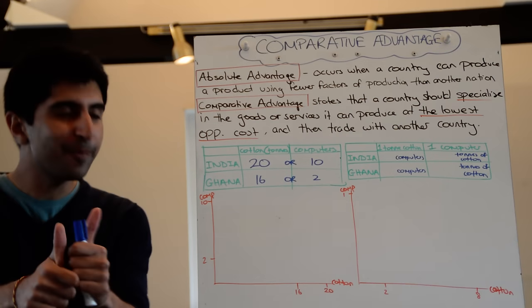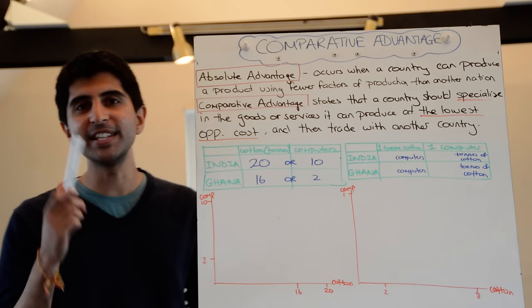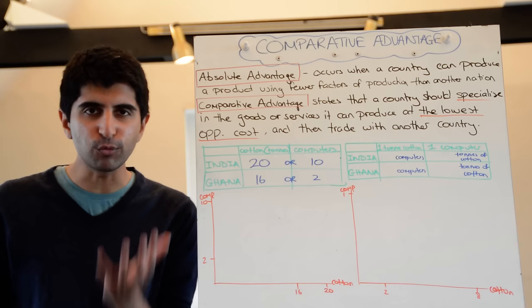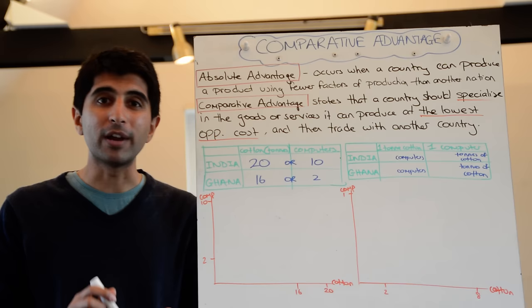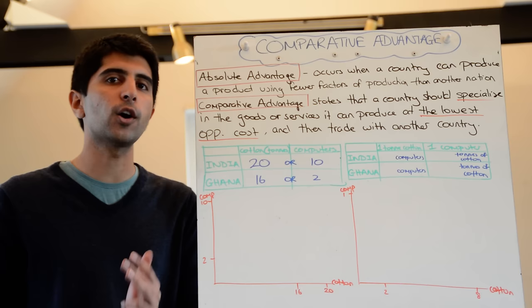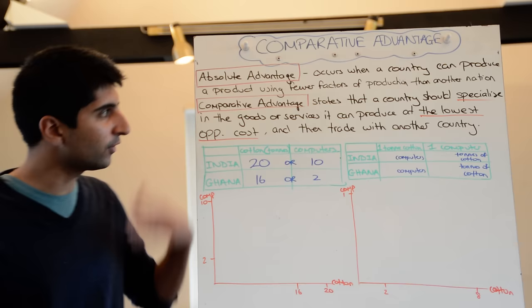Hi everybody. David Ricardo's fundamental law of comparative advantage — fundamental of course when it comes to international trade theory, but more generally in the whole of economics. Really hardcore theory here. In this video I'm going to explain with examples what the law actually states, draw PPC diagrams, trading PPC diagrams, talk about how a rate of exchange is important for comparative advantage theory to hold, and at the end talk about what determines how a country gains a comparative advantage.